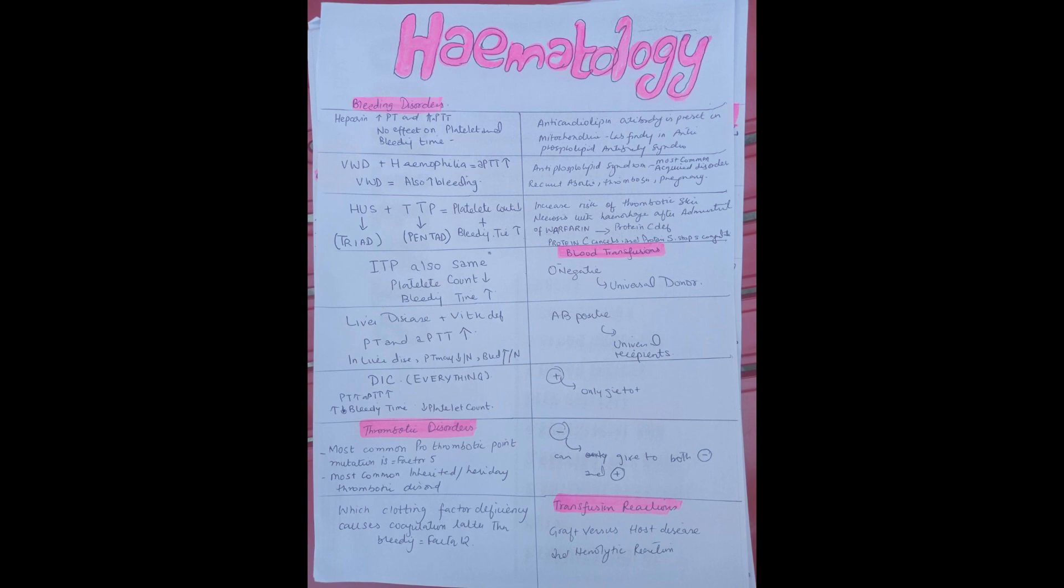All these bleeding disorders are repeatedly asked in the MCQs. You can see the roughy points to see the related MCQs. If you see the MCQs related to hemophilia, they are repeatedly asked if there is any history of genetics or any history of extraction of tooth.